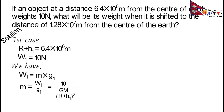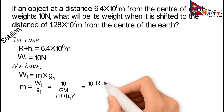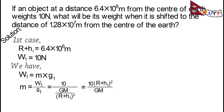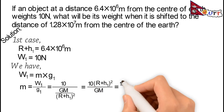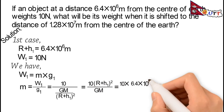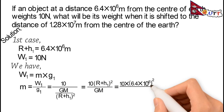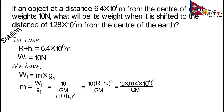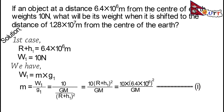So m = W₁ × (r + h₁)² / GM, which gives us m = 10 × (6.4 × 10⁶)² / GM. We will call this Equation 1.